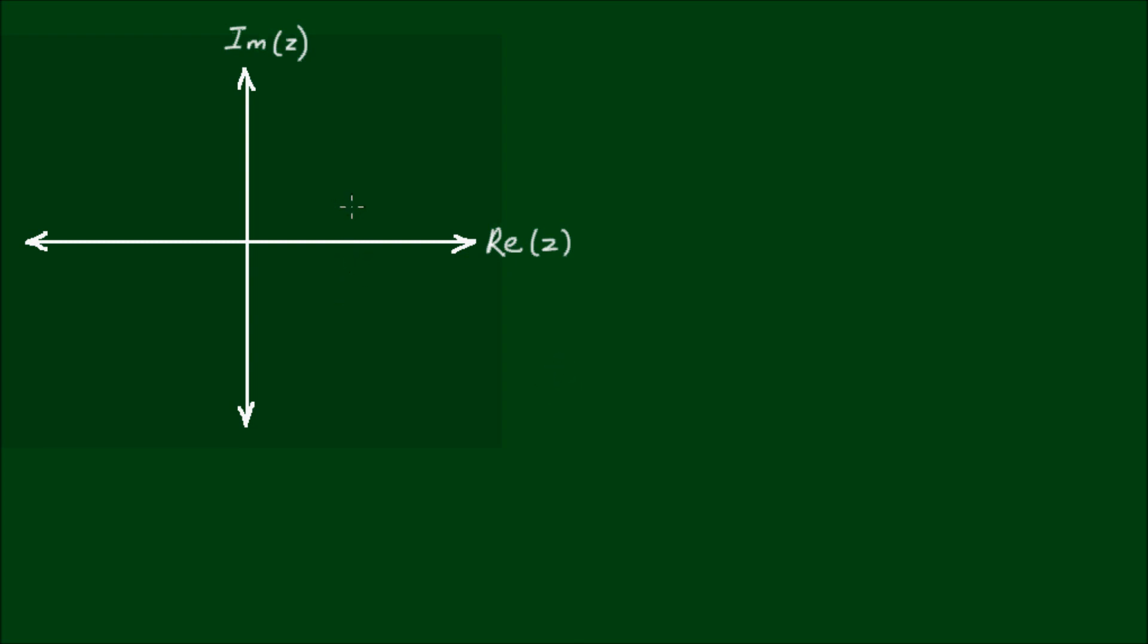So suppose I have an arbitrary complex number z1. From the origin, it will have a vector of length r1, and it will have some angle of θ with respect to the real axis.